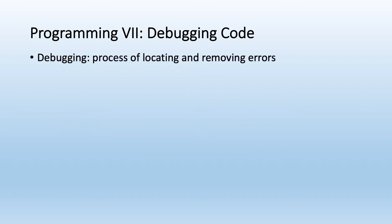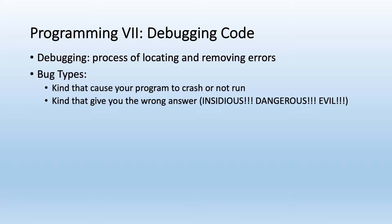Debugging is a process of locating and removing errors. There are different kinds of bugs: ones that cause your program to crash and not run, and ones that give you the wrong answer. The second kind are the worst — they're insidious and dangerous because you don't even know they're happening. We want our code to run, but also to give us the right answers.